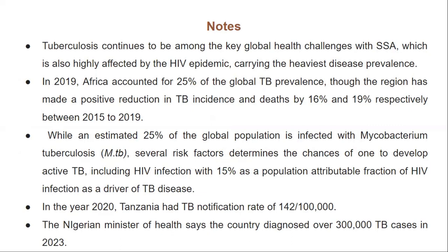Tuberculosis continues to be among the key global health challenges, with sub-Saharan Africa being a disease of concern. In 2019, Africa accounted for 25% of the global TB prevalence, which is significant. Although the region made a positive reduction in TB incidence and deaths by 16% and 19% respectively between 2015 and 2019, it will remain a disease of concern. There are risk factors determining the chances of one developing active tuberculosis, including HIV infection, which accounts for 50% of populations that come up with TB disease.